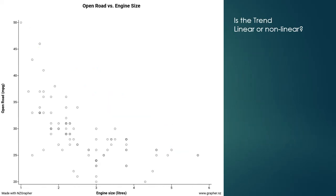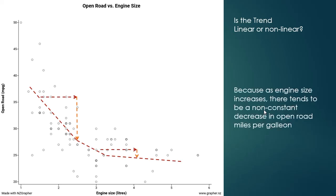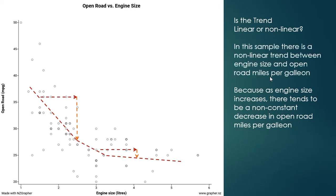Here we have open road miles per gallon versus engine size. Is this trend linear or non-linear? The line drops much more quickly at the beginning — as engine size increases initially, miles per gallon drops quite a lot. But as engine sizes get larger, miles per gallon isn't dropping at the same rate. Because there is a non-constant decrease in open road miles per gallon, this is a non-linear trend. Fitting a straight line of best fit is not ideal here; we're better off fitting a curve.